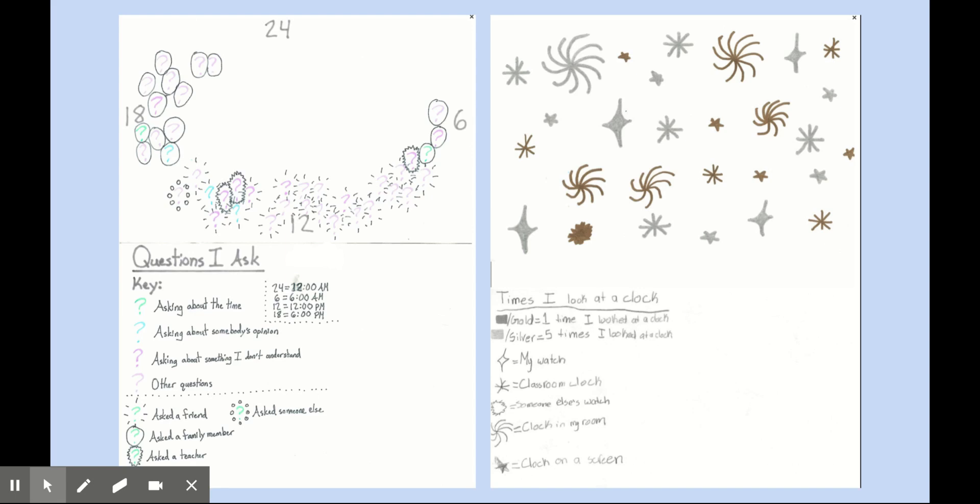This student decided to record how many times they're looking at the clock over the course of the day, and when they're looking at a clock, is that clock on a watch, is it in a classroom, et cetera. So interesting to know, symbolically, there are so many different ways to represent the data. We're encouraging the students to do so in a really expressive way. There's no one way to do this, so we're encouraging them to really think outside of the box here and to get creative with their expression.